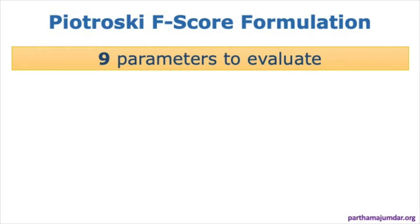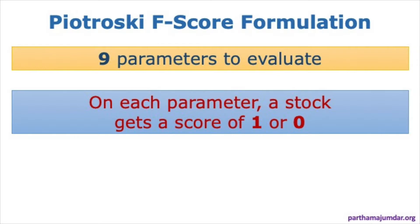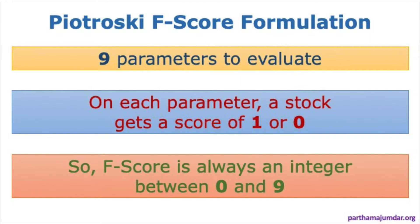In Piotrowski's formulation, he suggests that we evaluate each value stock on 9 parameters. On each parameter, a stock gets a score of either 0 or 1 — nothing in between. So Piotrowski's F-score is always an integer between 0 and 9. The more the score tends toward 9, the better the stock is considered as a purchase.